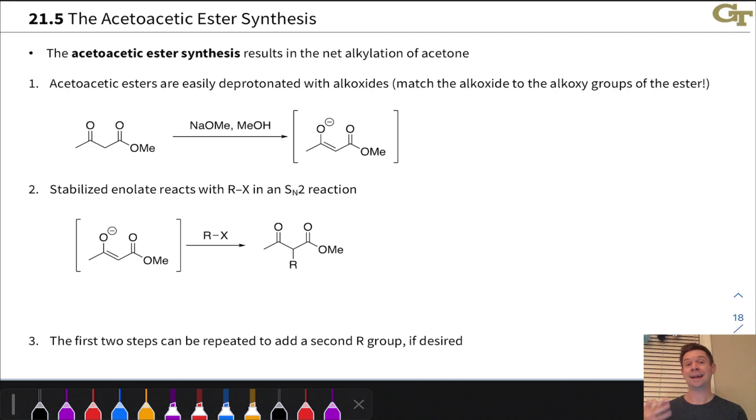Like malonic esters or malonate esters, acetoacetic esters are readily deprotonated with alkoxide or hydroxide base. And this is because of the additional electron withdrawing group connected to this CH2. We don't just have the ester group. We've got the ester plus another ketone pulling on that carbon, another carbonyl group pulling on that carbon. The pKa is way lower than a typical ester or ketone pKa. It's about 11 for methyl acetoacetate. So this can be readily deprotonated using sodium methoxide.